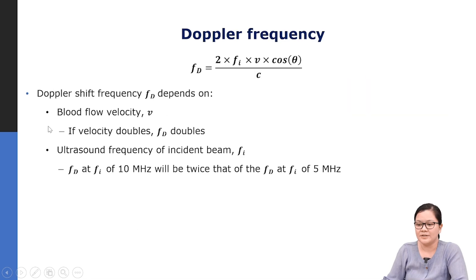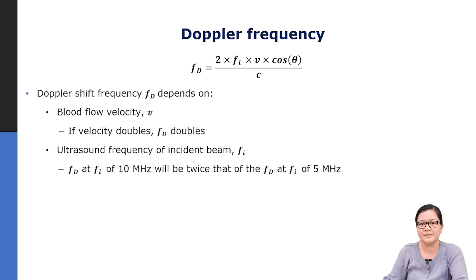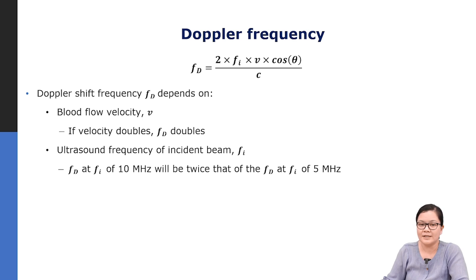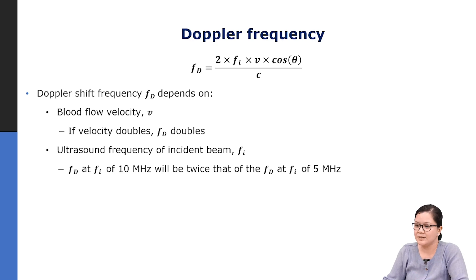The Doppler frequency shift depends on several factors. It is proportional to blood velocity: if the velocity doubles, the Doppler frequency shift doubles; if halved, the shift halves. The ultrasound frequency of the incident beam also affects it — the Doppler shift frequency is proportional to the incident beam frequency. So if the incident beam is at 10 MHz, the Doppler frequency shift would be twice that produced by a 5 MHz incident beam. Similarly, halving the incident frequency halves the Doppler shift frequency.